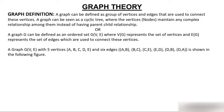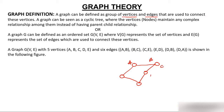A graph can be defined as a group of vertices and edges. If I show you a graph — suppose this is a graph with vertices A, B, C, D, E, and F — vertices are represented by circles, and edges are used to connect these vertices.